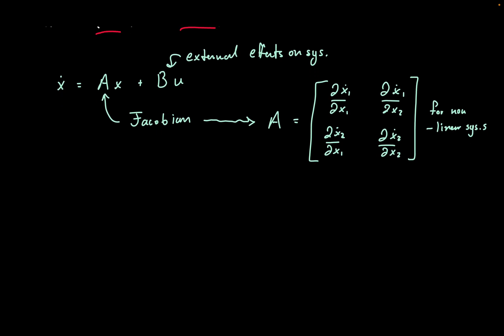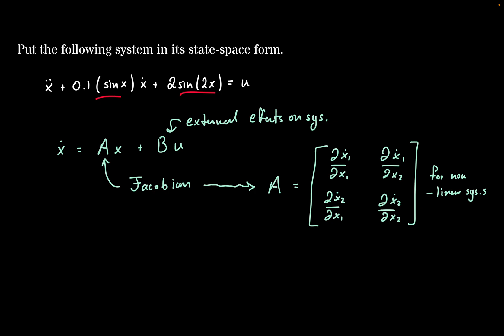One question that I always get when we start to define our x values is, how many should we define, and what should they be? What I always like to say is, count up the highest order derivative of every single variable that you have in your equation, and that will be the number of variables you'll have to define for your state-space form. In this case, we're not going to include u simply because it is an external effect on the system. That will leave us with x, and x will have a highest order derivative of 2. So in this case, we'll only have two x equations.